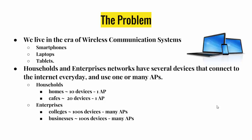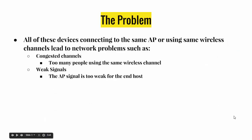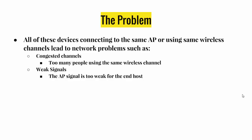So why is this a problem? If a lot of devices connect to the same AP or use the same wireless channel, this could lead to congested channels — meaning too many people are using the same wireless channel, which deteriorates bandwidth. Another problem is weak signals, where the AP is too weak for the end host, meaning the device is at the very edge of the wireless signal.